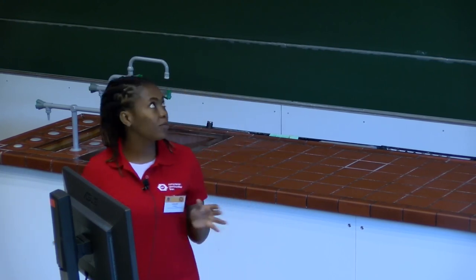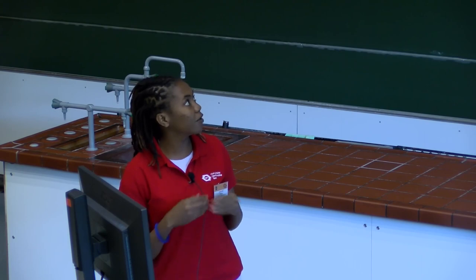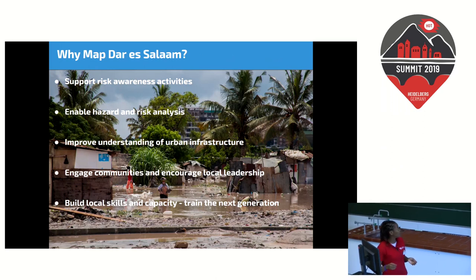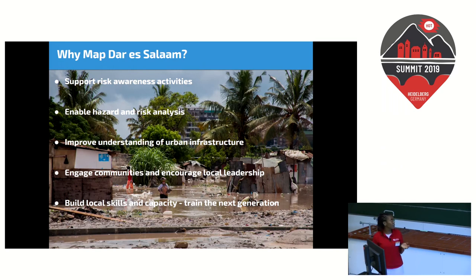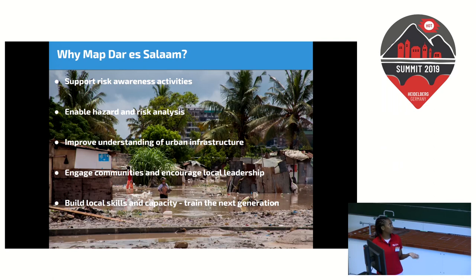This project was conducted under the Dar Ramani Huria project, which is a community-based mapping project focusing on making Dar es Salaam, a city in Tanzania, more flood resilient. It is participatory because we work with the community and students of Dar es Salaam. Dar is one of the fastest growing cities in Africa and the most developed city in Tanzania, but it is also the most affected by floods, which occur at least twice every year.